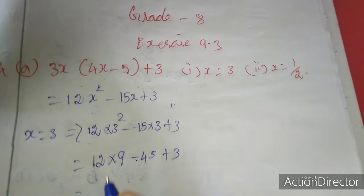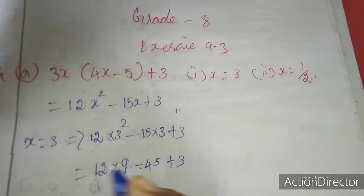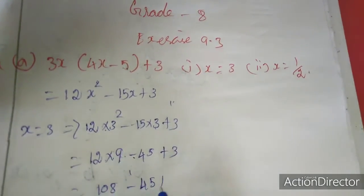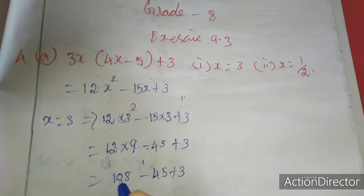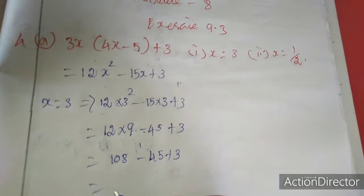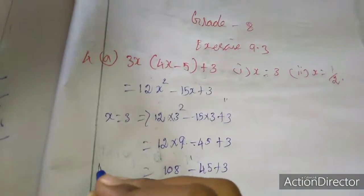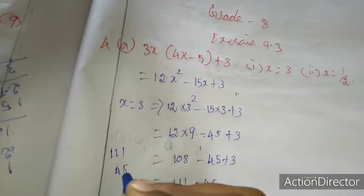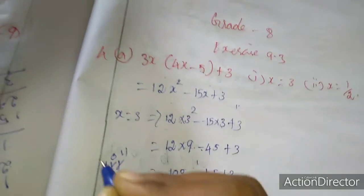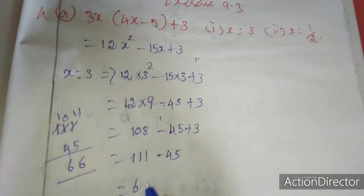Now I am multiplying here, 12 into 9. 9 times 2 is 18, write 8 carrying 1, 9 times 1 is 9 plus 1 is 10. Write 108 minus 45 plus 3. I am going to add 108 plus 3, which gives 111 minus 45. Subtracting, borrow: 11 minus 5 is 6, 10 minus 4 is 6. So the answer is 66.